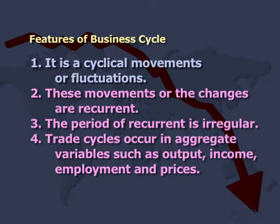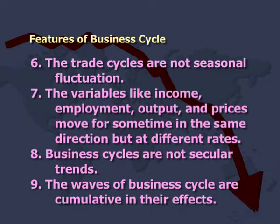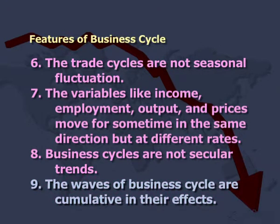Now let's understand the features of business cycle. It is a cyclical movement of fluctuations; these movements or changes are recurrent, and the period of recurrence is irregular. Trade cycles occur in aggregate variables such as output, income, employment, and prices. Industries of durable goods have relatively wide fluctuations in output and employment but small fluctuations in price. Industries of non-durable goods have relatively wide fluctuations in price compared to output. Trade cycles are not seasonal fluctuations. Variables like income, employment, output, and prices move in the same direction for some time but at different rates. Business cycles are not secular trends; the waves of business cycle are cumulative in their effects.